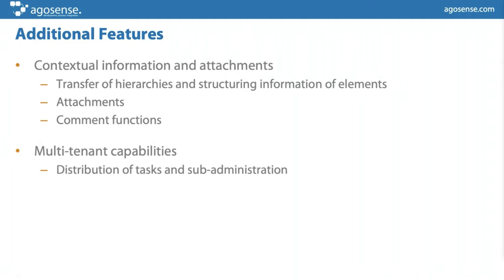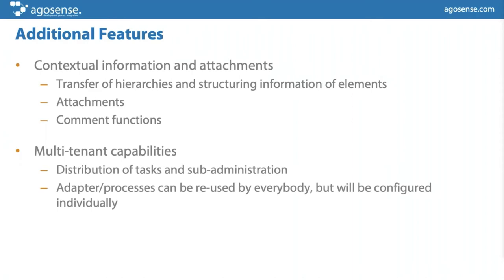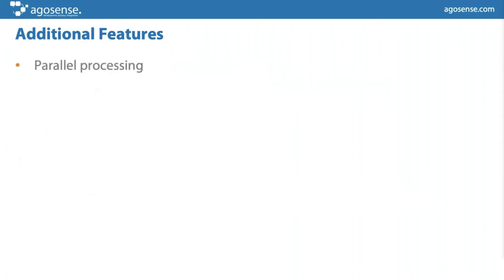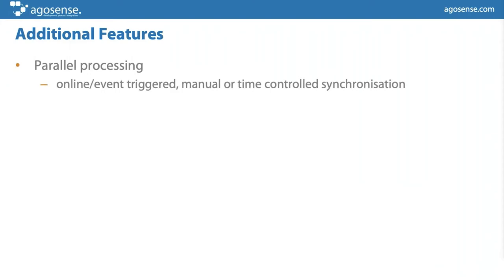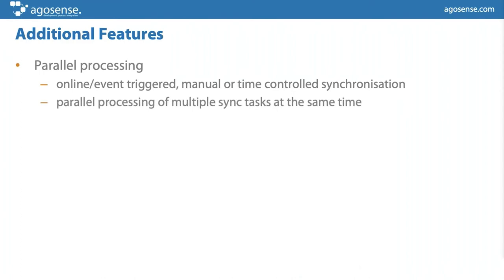You can enable a kind of sub-administration on the system. Further features include running multiple synchronization processes in parallel. There are different options for how to start synchronization processes — what Christian showed was manual triggering, which is usually used for testing purposes when you don't want to wait for the schedule to trigger a process. You can also have the start of a process triggered by one of the tools you are integrating — for example, with event triggers, server-side event triggers, or user-defined buttons. There are a lot of options here.